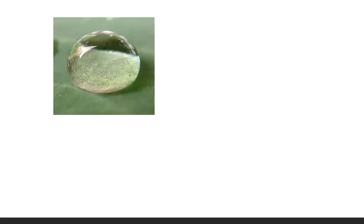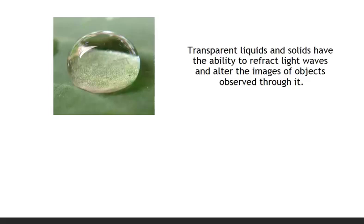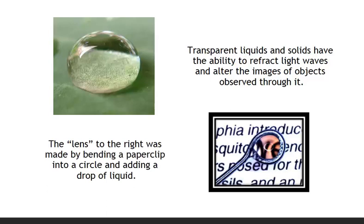No one knows who the first person to discover the magnifying properties of a curved surface was. It was very possibly a Neanderthal's chance encounter with a drop hanging from a leaf. Transparent liquids and solids have the ability to refract light waves and alter the images of objects observed through them. This fortuitous event probably led to manufactured devices to perform the same function. The lens shown here was made by bending a paper clip into a circle and adding a drop of liquid.